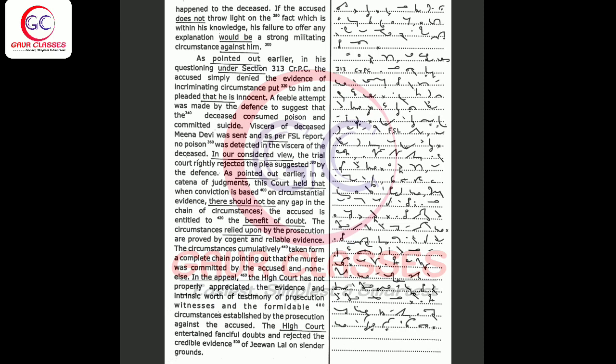The circumstances relied upon by the prosecution are proved by cogent and reliable evidence. The circumstances cumulatively taken form a complete chain pointing out that the murder was committed by the accused and none else.